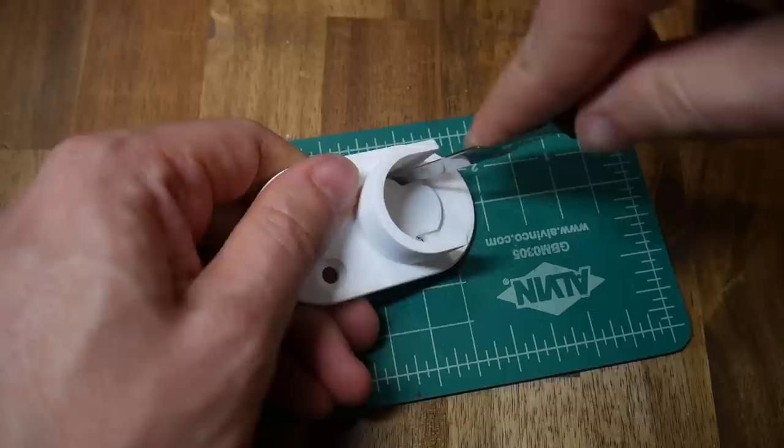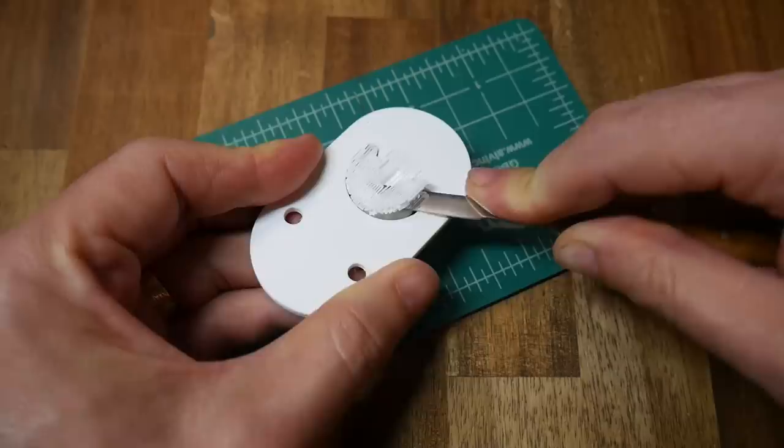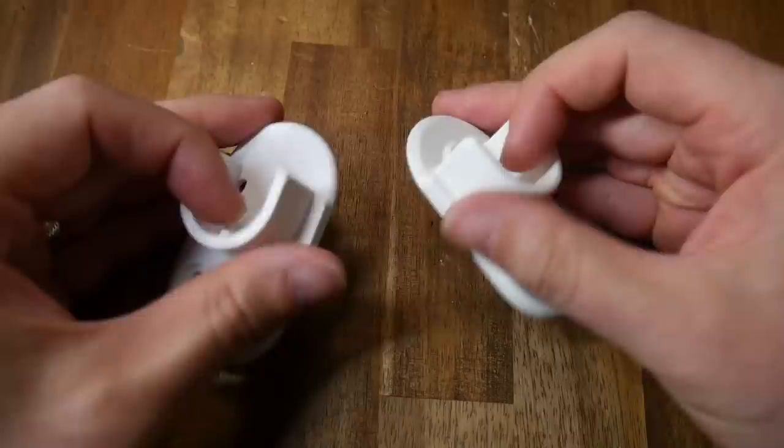Prusa Slicer did a good job with the support because it was pretty easy to poke out of the way, first loosening it from the top and then sliding in a tool underneath. In about 30 seconds, all of the support material had been removed.